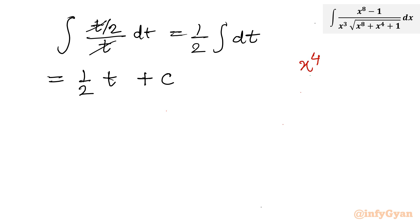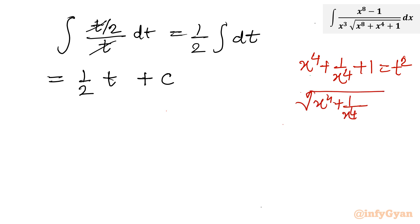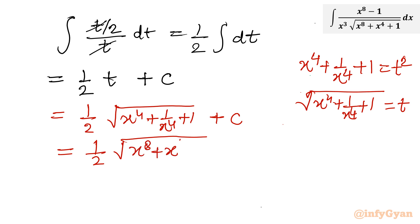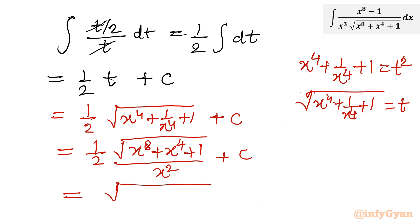Now let us put the value of t back. Our substitution was x^4 + 1/x^4 + 1 equal to t^2, so the value of t will be the square root of x^4 + 1/x^4 + 1. In that place I will write (1/2) times the square root of x^4 + 1/x^4 + 1, plus c. Simplifying, that is the square root of x^8 + x^4 + 1 divided by x^2, times 1/2, plus c.